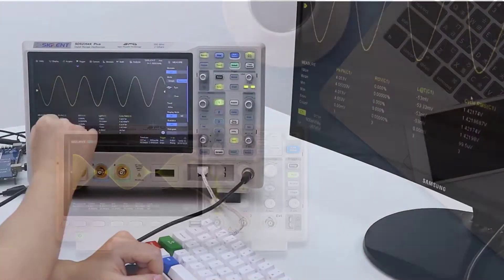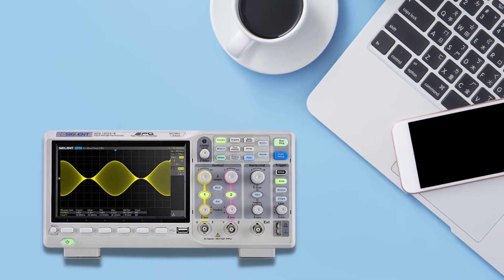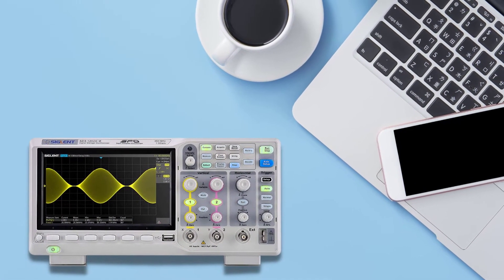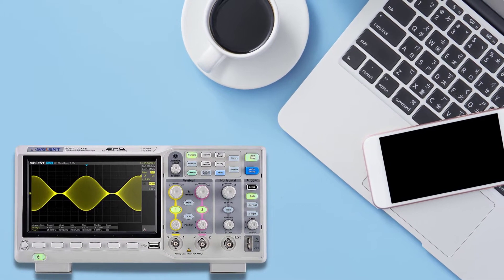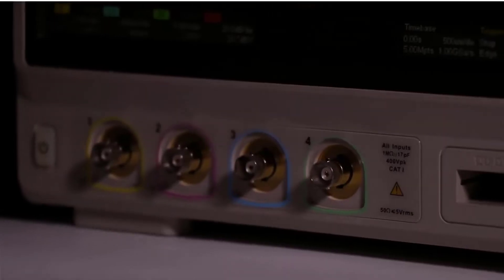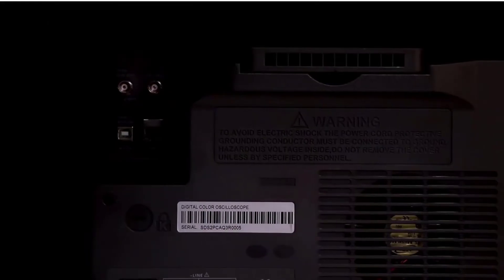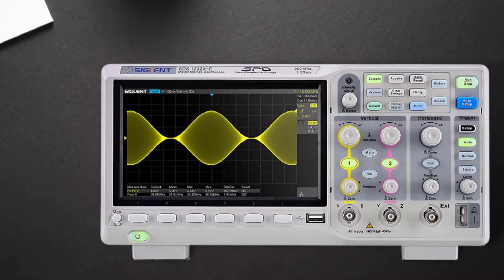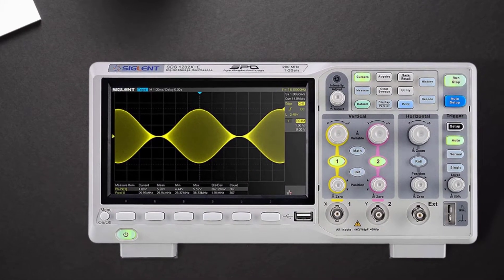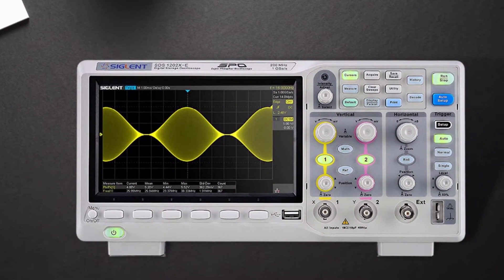Another great scope from Siglent Technologies is the SDS-1202XE that offers 200 MHz bandwidth, two channels, a sampling rate of 1 Gsample/s, and much more. With simpler measurement and modifications and an intuitive dial interface, the Siglent SDS-1202XE is both a technical and entry-level tool for newbies, making it really quick to understand.